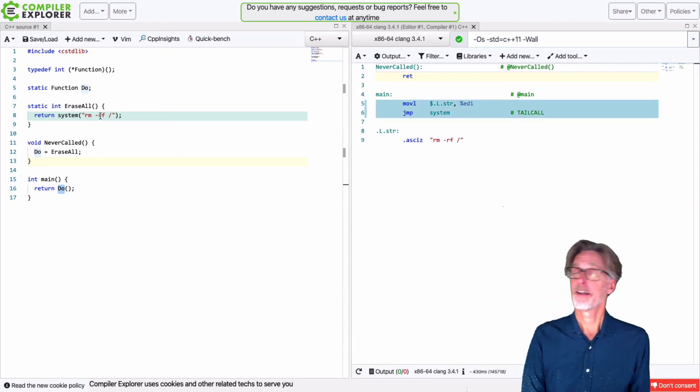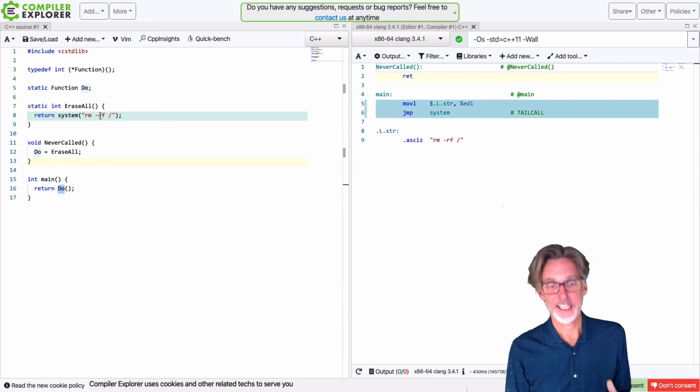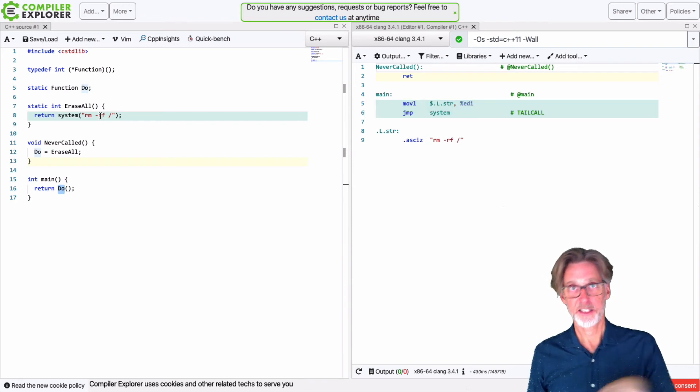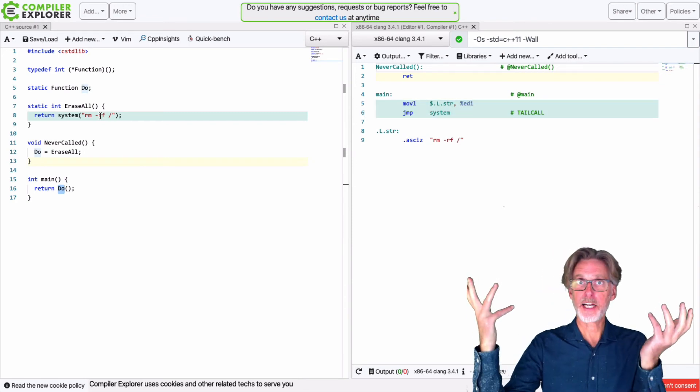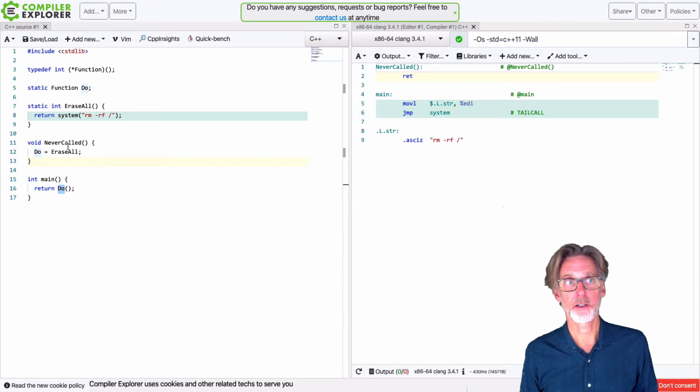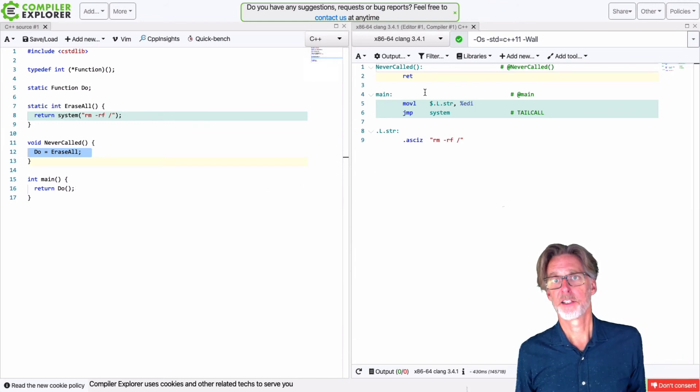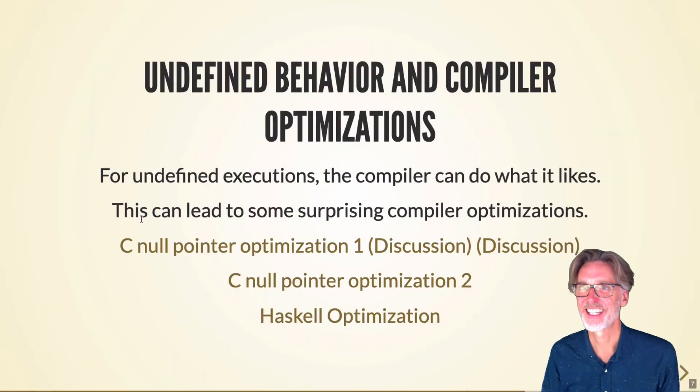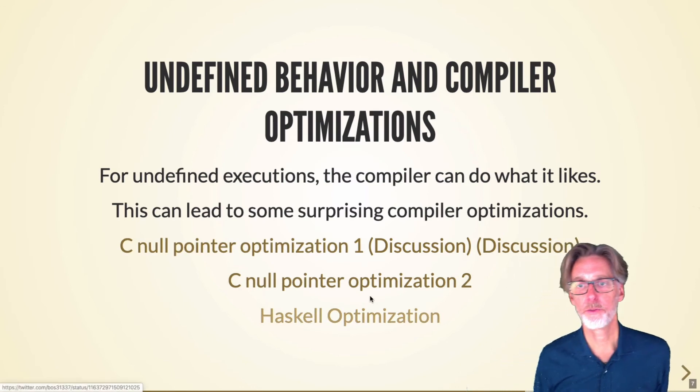However, if you ever dereference a pointer in C that is not initialized, then the program is undefined. So in this case, this is a real compiler. The compiler looks and sees that this is the only assignment ever to this variable. And therefore, we can just use it. So the compiler decides to simply use this and it optimizes all this stuff away. So your main program essentially just calls this function. So you can end up with surprising effects of these compiler optimizations. And there's a few more linked here.